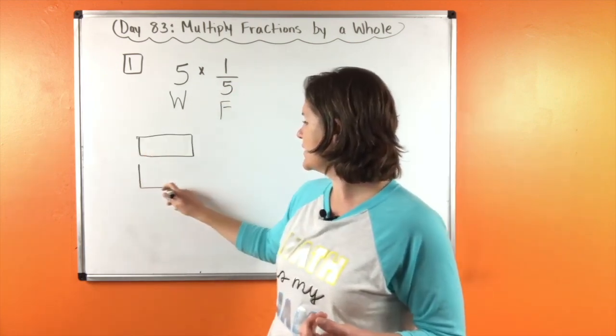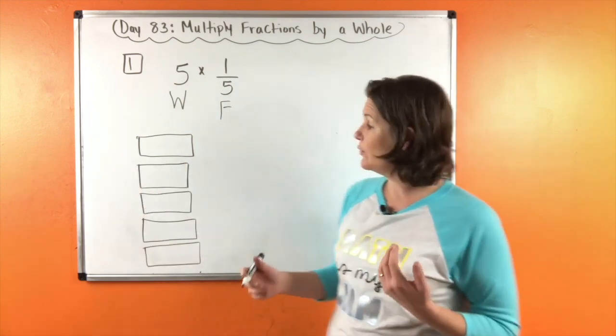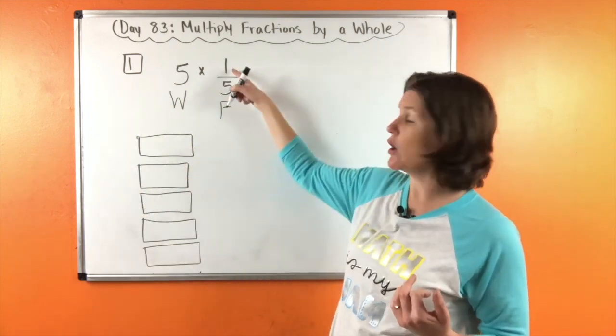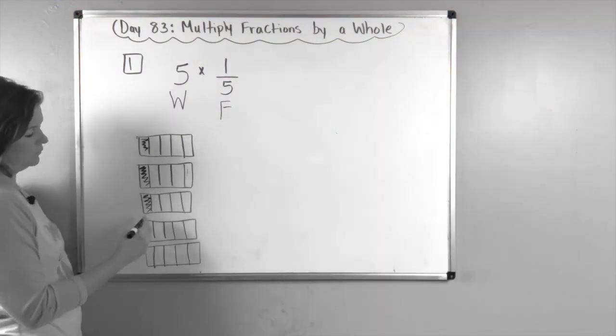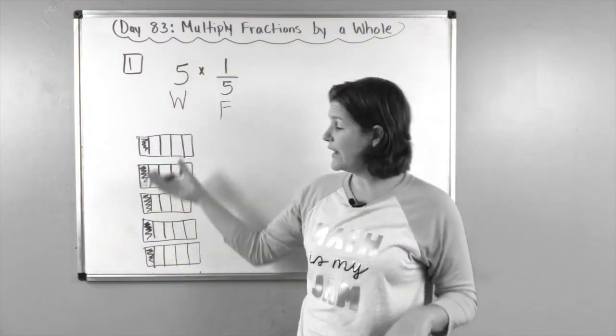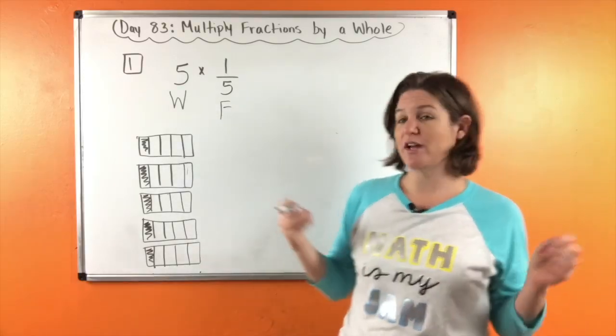And now in each group I'm going to draw one-fifth. Okay, so I've drawn five groups with one-fifth in each. Now let's see what happens when I join these together.